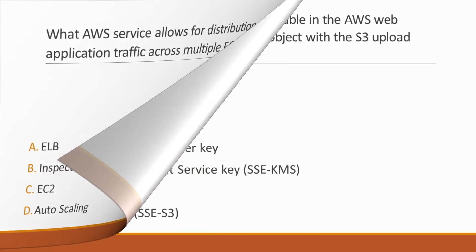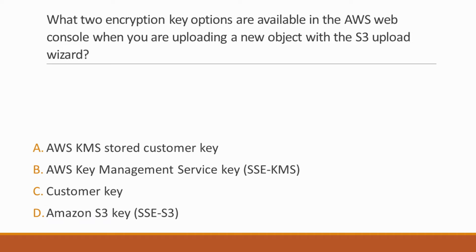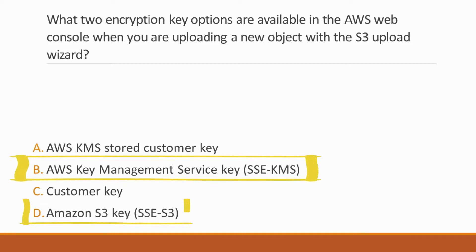Next question: What two encryption key options are available in the AWS web console when uploading a new object with the S3 upload wizard? Options: A. AWS KMS Stored Customer Key, B. AWS Key Management Service Key (SSE-KMS), C. Customer Key, D. Amazon S3 Key (SSE-S3). Correct answers are option B and D — the Amazon S3 Master Key and the AWS KMS Master Key options.